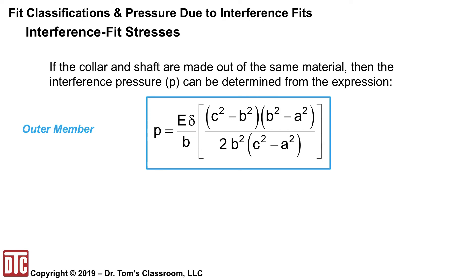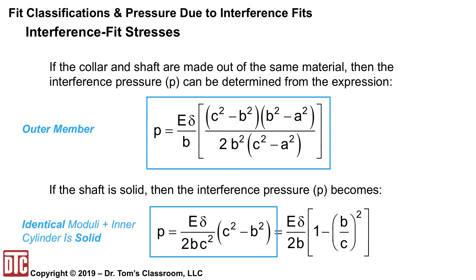Some simplifications can happen. If the collar and shaft are made of the same material, the interface pressure can be determined from the simplified expression in the reference handbook. This is for the outer member with the C-squared term; the A-squared term goes away if the shaft is solid. For a solid shaft of the same material, the equation becomes P = E·delta·(C² − B²) / (2B·C²), which can also be written as P = (E·delta / 2B) · [1 − (B/C)²], which helps simplify calculations before substituting numbers.